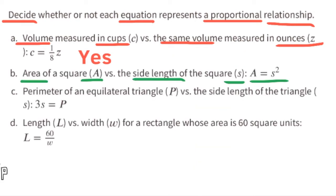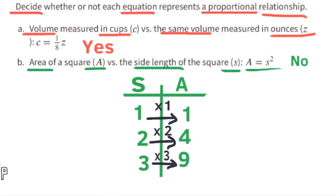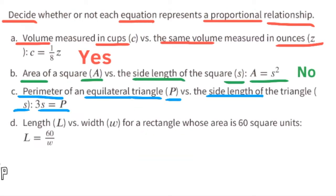Part b: area of a square a versus the side length s. This equation can be written as a equals s squared. No, this does not represent a proportional relationship, because you're not constantly multiplying the side length by the same number to get the area. For example, side length 1 × 1 = area 1; side length 2 × 2 = area 4; side length 3 × 3 = area 9. The area does not have a proportional relationship with the side length.